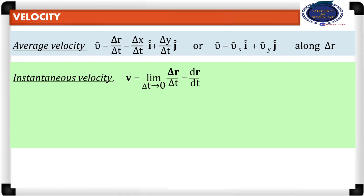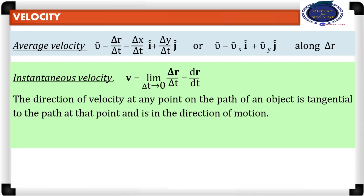The instantaneous velocity is obtained by taking the limit of average velocity as delta t tends to 0, which is represented as dr by dt. The direction of velocity at any point on the path of the object is tangential to the path at that point and is in the direction of motion.